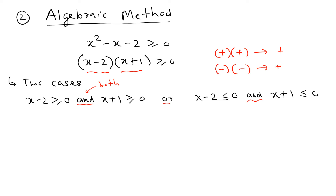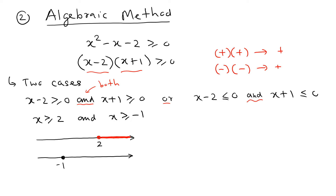For Case 1, adding 2 to both sides gives x ≥ 2, and subtracting 1 gives x ≥ -1. Graphing these on a number line, the first condition highlights the right side from 2, and the second highlights the right side from -1. The solution is what is common to both, which is x ≥ 2, or the interval 2 to infinity.